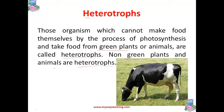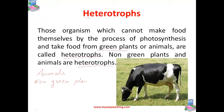You may say that we can easily understand about animals being heterotrophs because they cannot perform photosynthesis. But we don't know any example of non-green plants. So let us talk a little bit more about non-green plants.